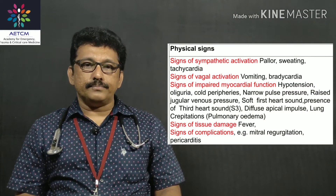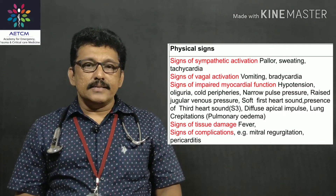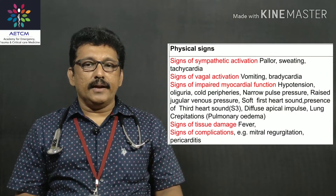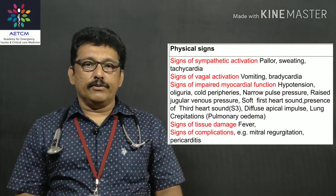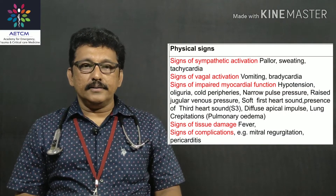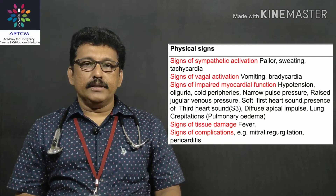You can have bilateral crepitations due to pulmonary edema. Signs of tissue damage include fever due to tissue inflammation. Other complications like mitral regurgitation and pericarditis can be present. The initial presentation will be acute-onset left-sided chest pain not relieved with salbutamol or rest, which may radiate to the left arm.